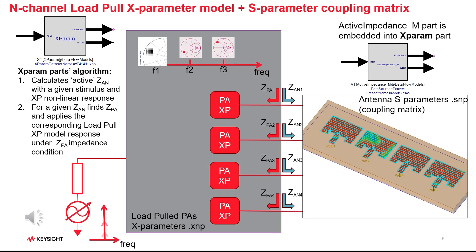X-parameters are a proven robust technology to capture device nonlinearities. They are intended to contain information about harmonic distortion and can also include multidimensional data such as fundamental frequency and power level sweeps, source and load-pull data, different test temperature points, several bias points, and much more. Load-pull data is a crucial element in such a behavioral model because each power amplifier in every channel sees a different antenna impedance depending on the steering angle. In short, the Xparam part pulls out the correct behavior of the power amplifier model according to the stimulus and the loading condition being deployed in a phased array system.